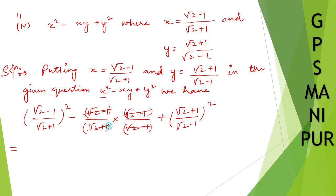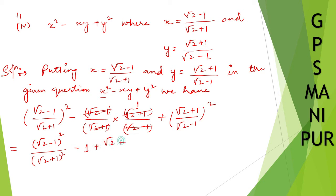For the x y term, (√2 minus 1)/(√2 plus 1) times (√2 plus 1)/(√2 minus 1) — these cancel, so we are left with 1. Now separating x squared and y squared: numerator and denominator written separately — (√2 minus 1) squared divided by (√2 plus 1) squared, minus 1, plus (√2 plus 1) squared divided by (√2 minus 1) squared.